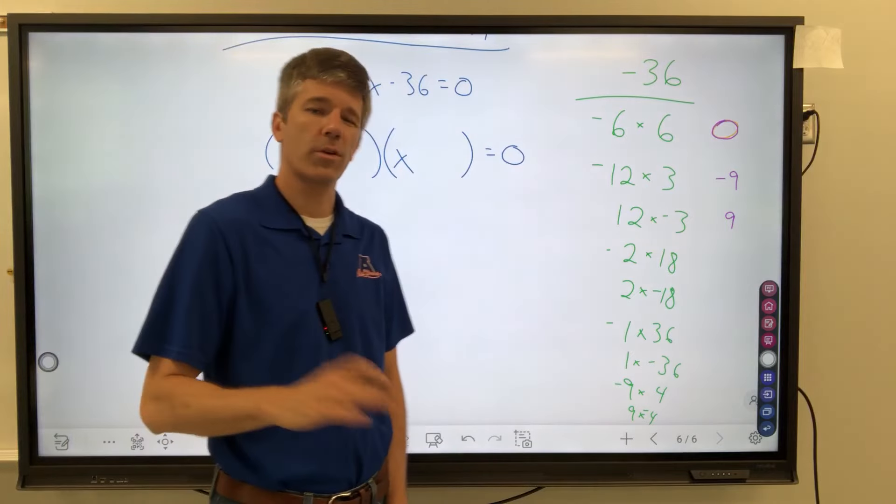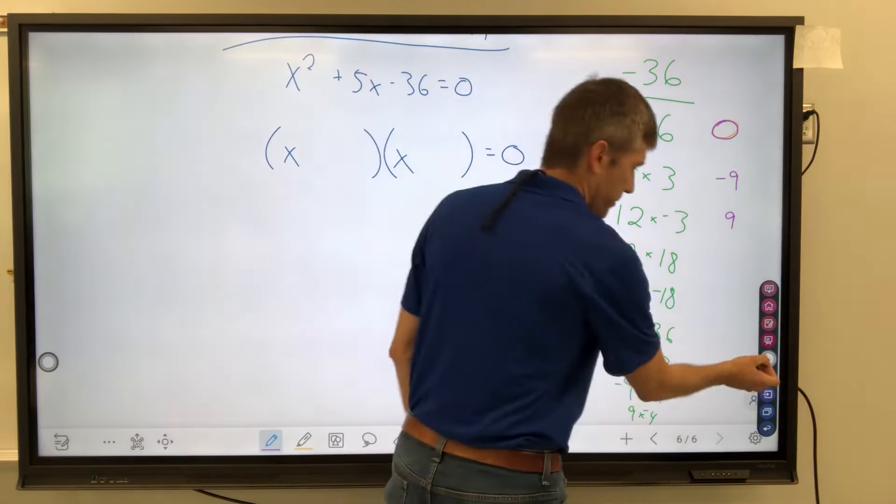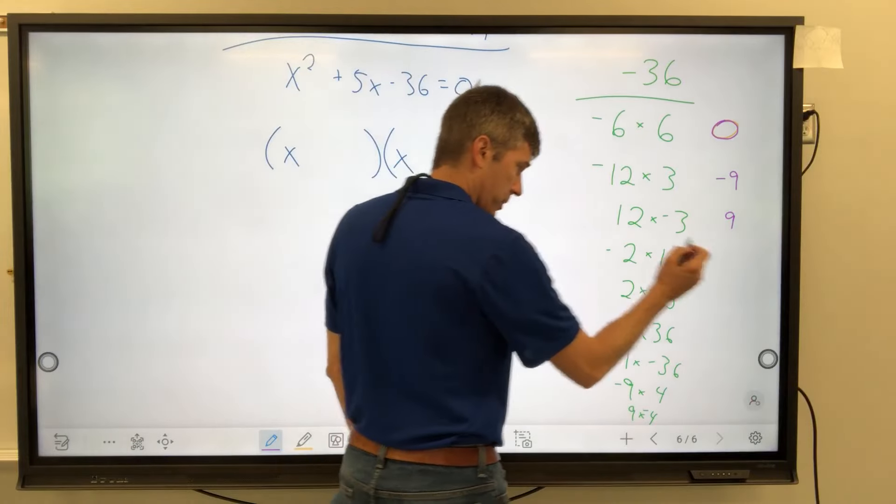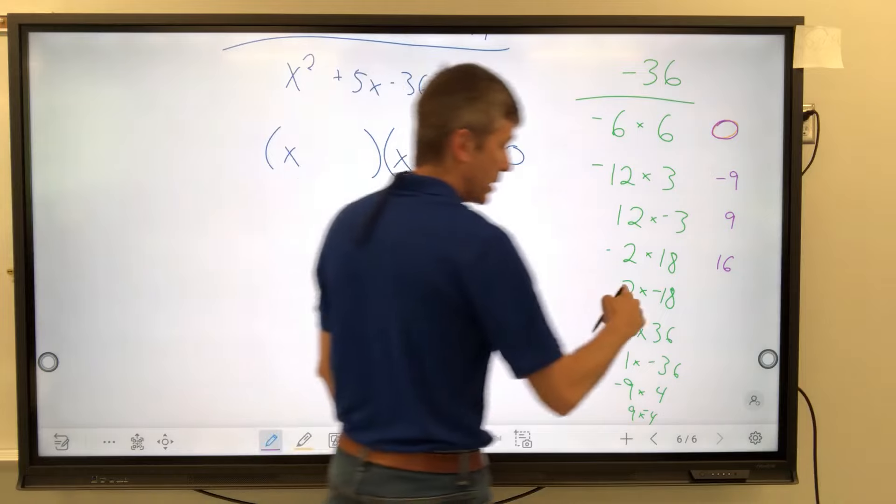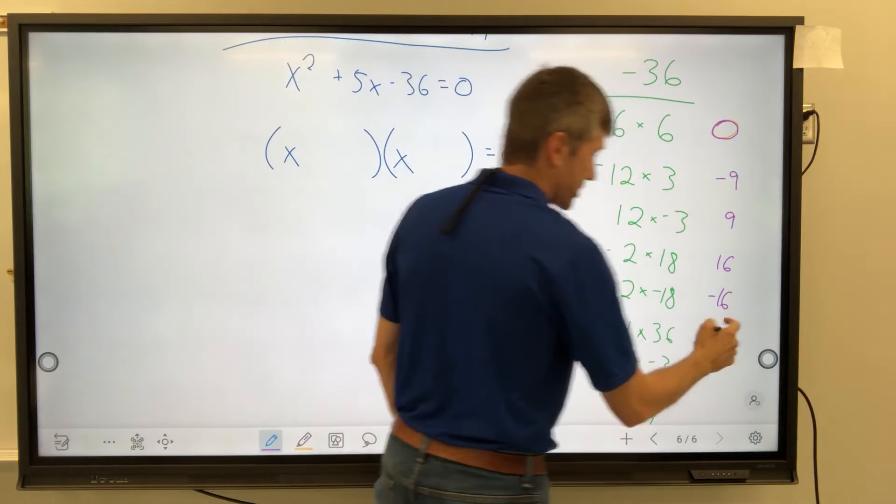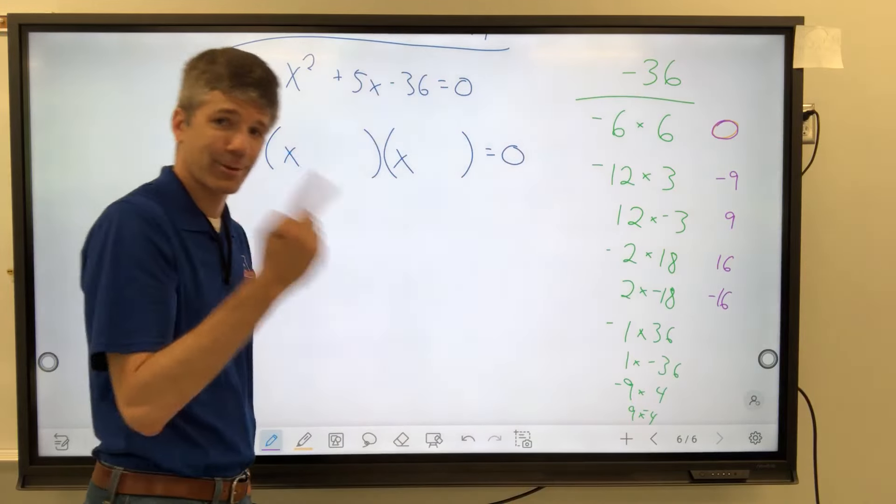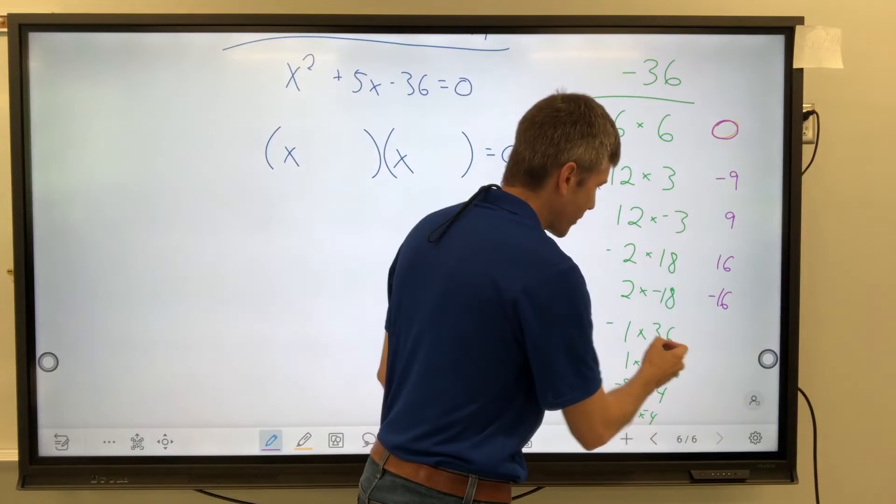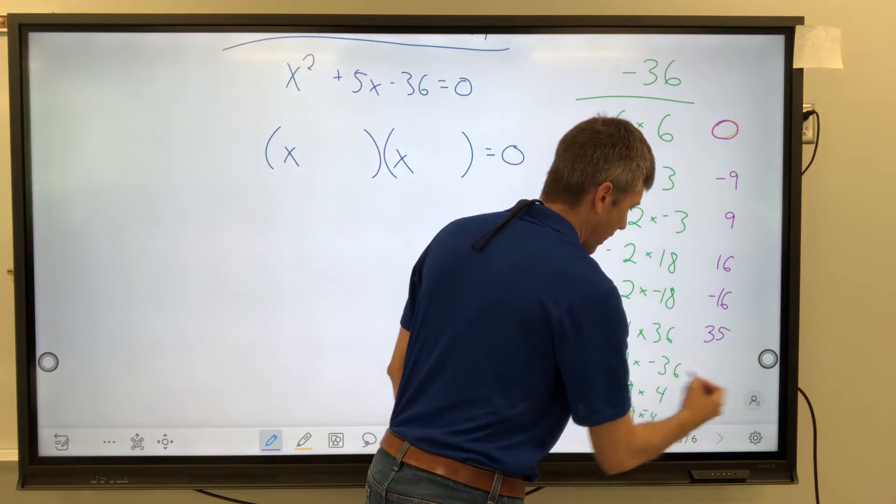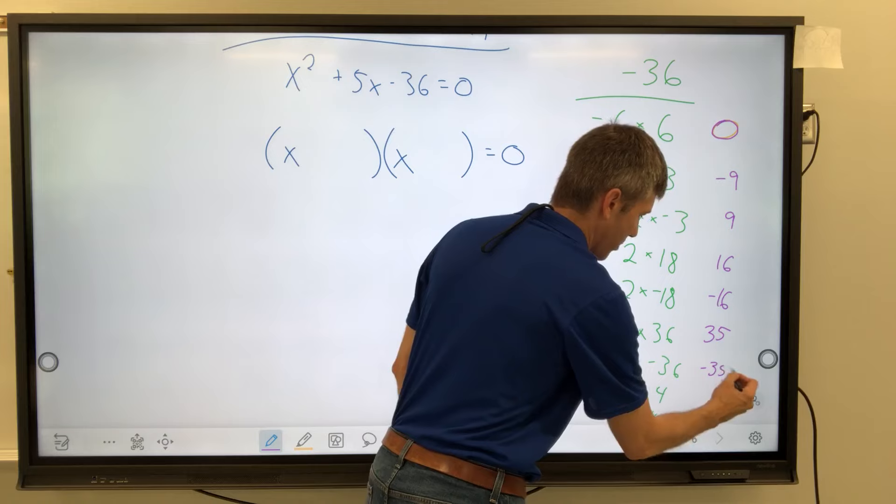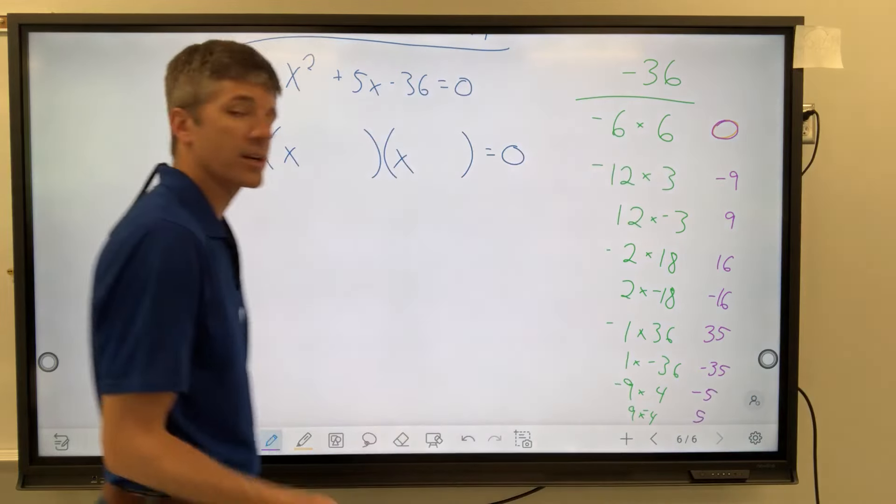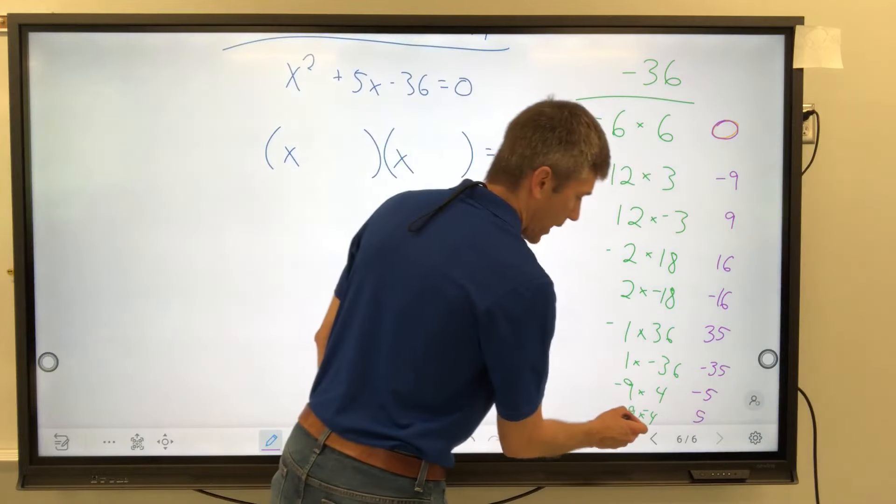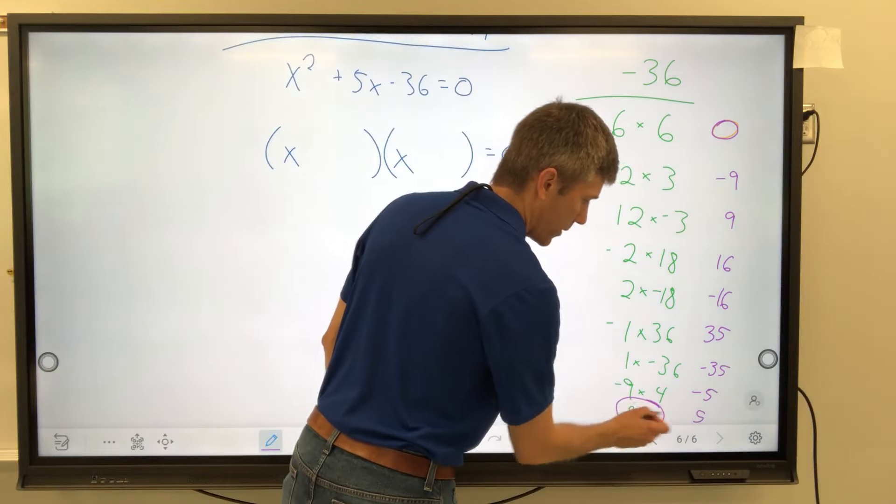If you don't know why I'm aiming for a 5, you'll see it in a minute. This is a review for you. Negative 2 plus 18 is 16. That's not a 5. I'm looking for a 5. 2 plus negative 18 is negative 16. That's not a 5. I'm looking for 5. Negative 1 plus 36 is 35. 1 plus negative 36 is negative 35. That's negative 5. That's positive 5. That's the last one. Okay, here's what that means. 9 plus negative 4 is 5.